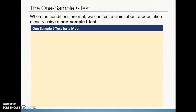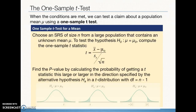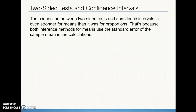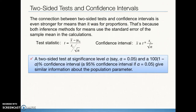If conditions for inference are met, we conduct a one-sample t-test for the mean. The test statistic is calculated using the T formula, and we calculate our p-value based on those T results. That gives us either a right-hand probability for a greater than alternative, a left-hand probability for a less than alternative, or a two-sided probability for a not equal to alternative. There is a strong connection between a two-sided significance test and a confidence interval — for means, both methods use the standard error of the sample mean.